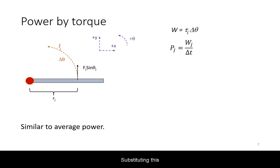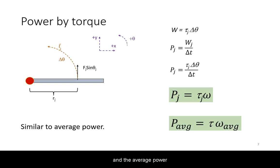Substituting this into our equation for power, we can get the power delivered by each torque times the average power through the average angular velocity.